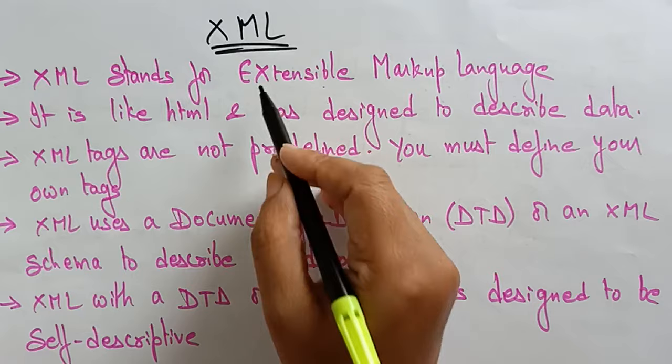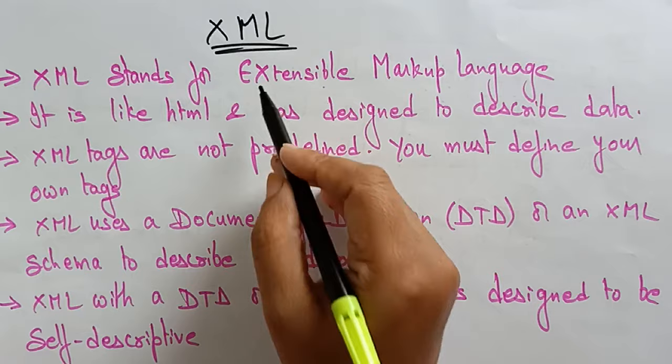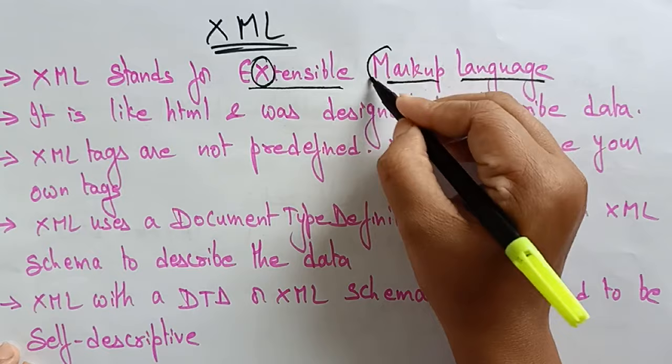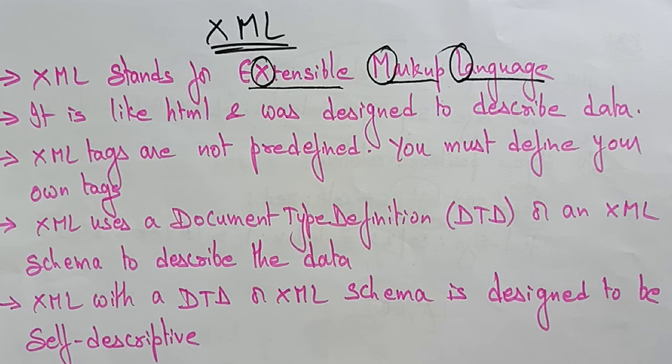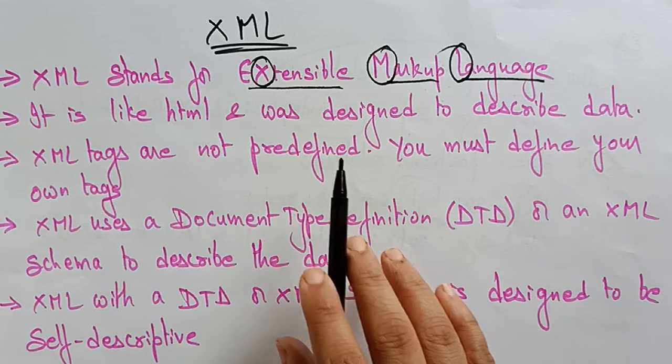What is XML? XML stands for extensible markup language. It is just like HTML and was designed to describe the data. HTML is static — whatever you write is displayed on the screen. But whereas XML, it is just like HTML, but it was designed to describe the data — whatever data you are using is going to be described.